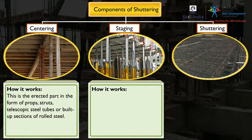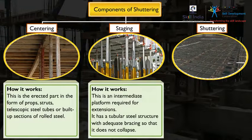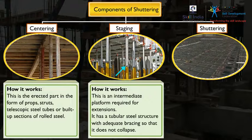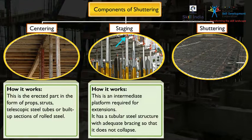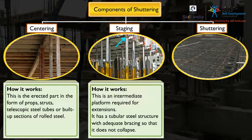Staging. This is basically an intermediate platform required for extensions in cases where the height of the slab is more than three and a half meters. It has a tubular steel structure with adequate bracing so that it does not collapse.